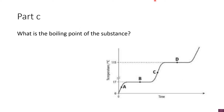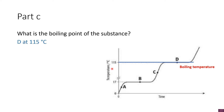Part C: what is the boiling point of the substance? The boiling point is when the liquid turns to a gas. According to the graph, that is the point where the liquid turns to a gas, so the boiling point is at 150 degrees Celsius.